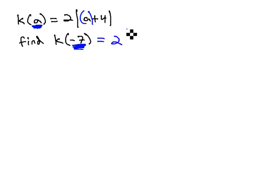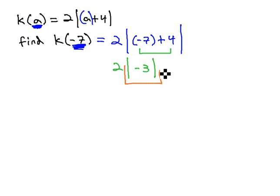Giving us 2 times the absolute value of a, which is -7 plus 4. Order of operations tells us to work out the absolute value first, so we'll do the -7 plus 4, which is -3. And then we can actually evaluate the absolute value, which makes anything positive. So when -3 becomes positive, we get positive 3.